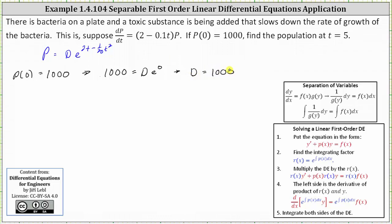So now we know the particular solution is p(t) equals 1,000 times e^(2t - 1/20 t²). And now we can determine the population at t equals 5.